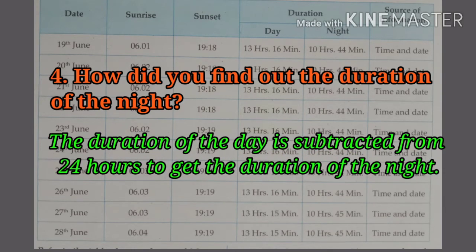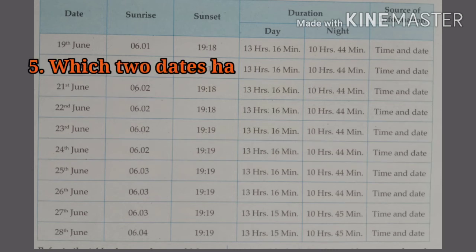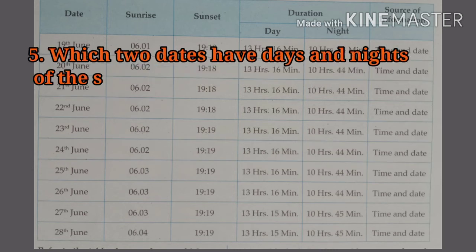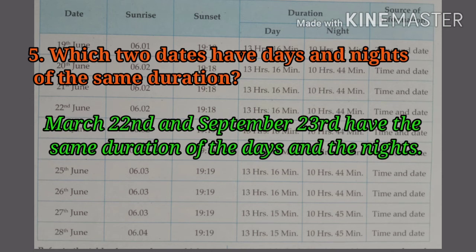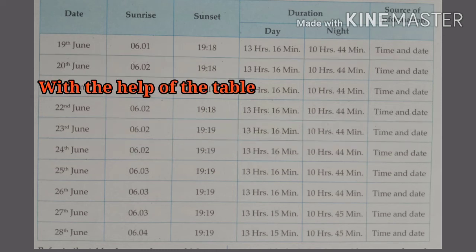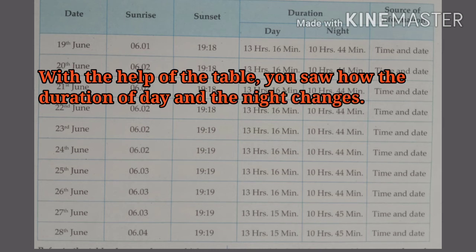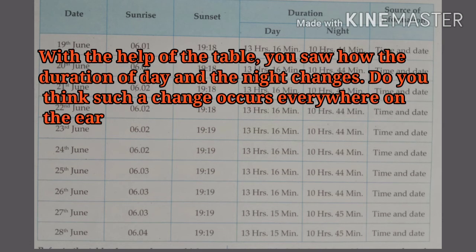How did you find out the duration of the night? The duration of the day is subtracted from 24 hours to get the duration of the night. Which two dates have days and nights of the same duration? March 22nd and September 23rd have the same duration of days and nights. Do you think such a change occurs everywhere on the earth?